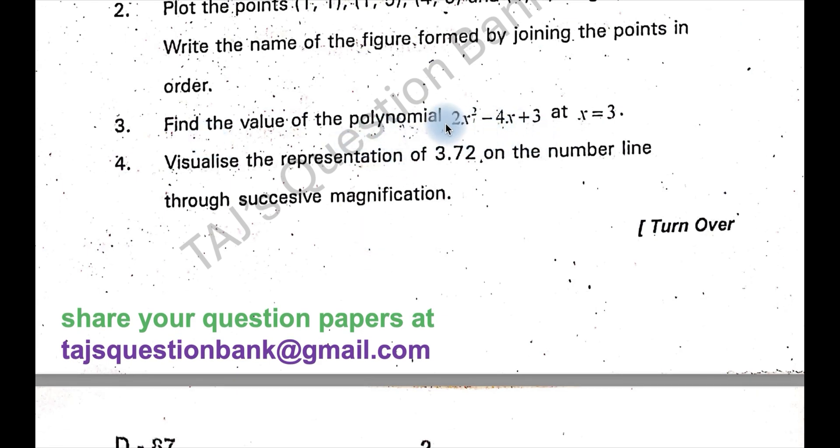Value of the polynomial will be 2 into 3 square is 9. 9 twos are 18. 18 minus 4, twos are 12, that is 6. 6 plus 3, 9. Answer will be 9.